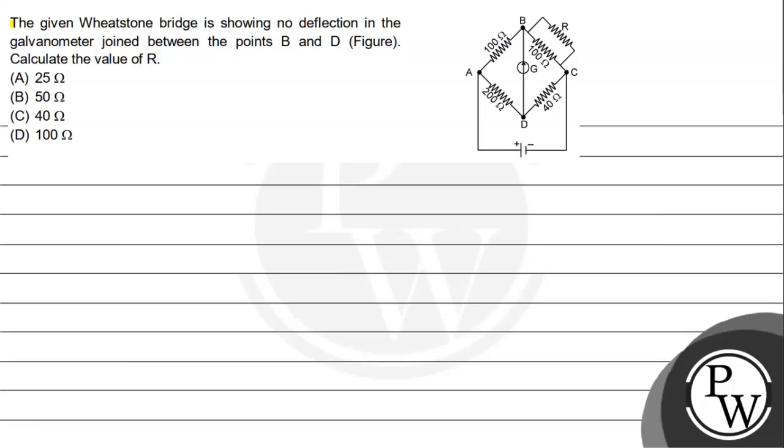Hello, let's read the given question. The question says: the given Wheatstone bridge is showing no deflection in the galvanometer joined between points B and D as shown in the figure. Calculate the value of R.